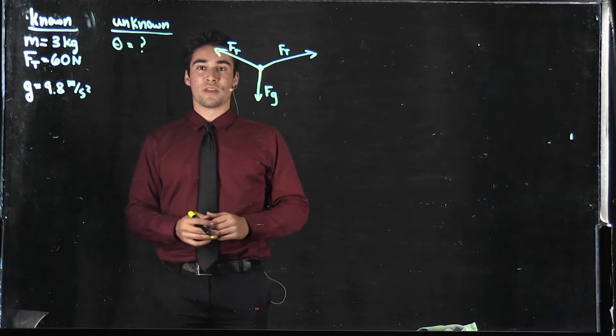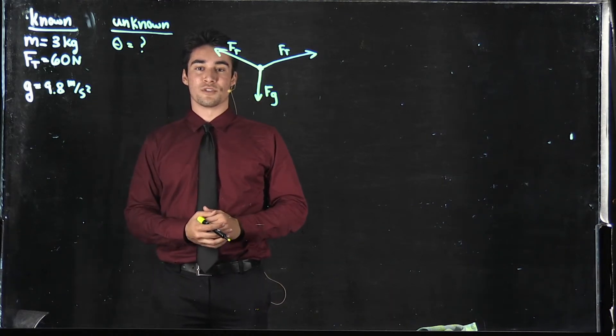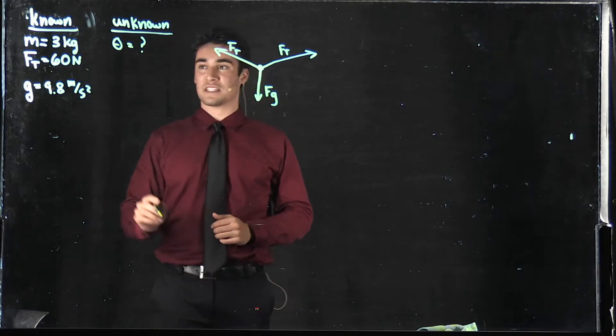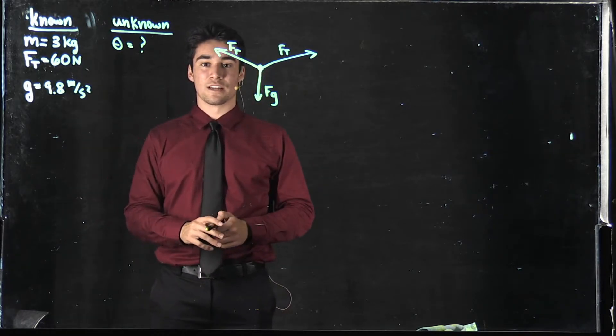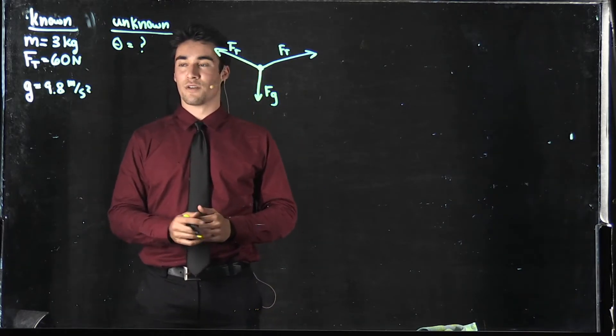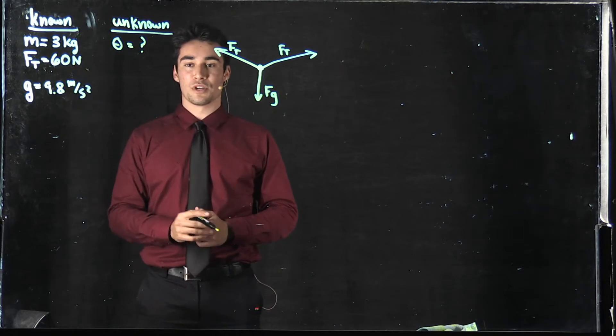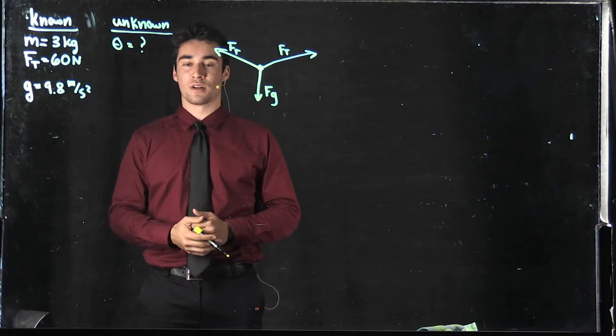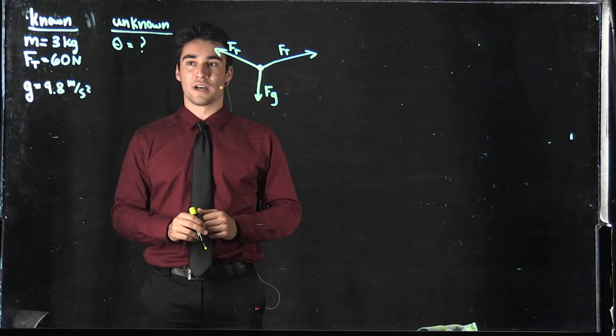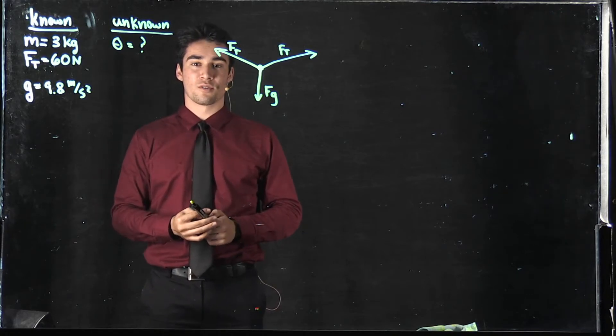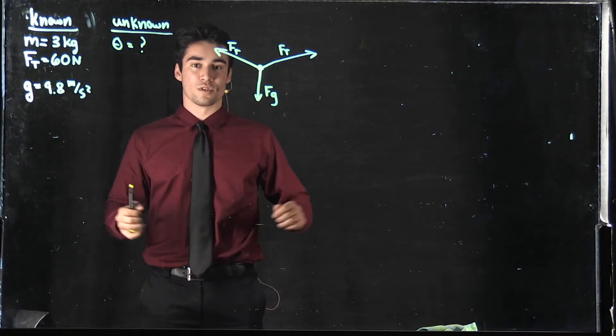For this problem we have a wet bathing suit hanging on a horizontal string in a dorm room. This wet bathing suit has a mass of 3 kilograms and the horizontal string has a force of tension of 60 newtons. We also know that gravity is 9.8 m/s squared and the problem asks us to find the angle at which the horizontal string will sag.